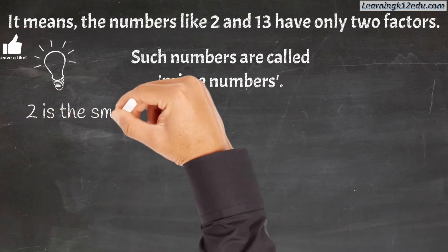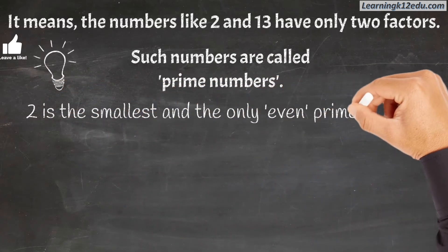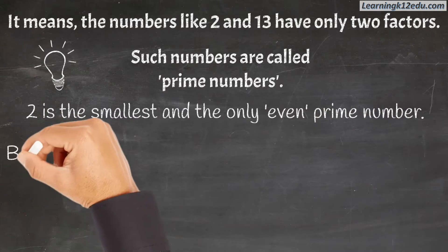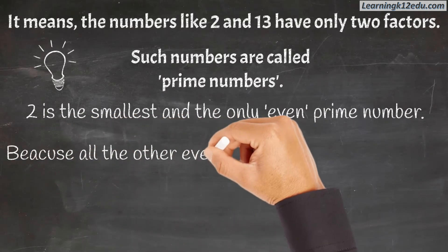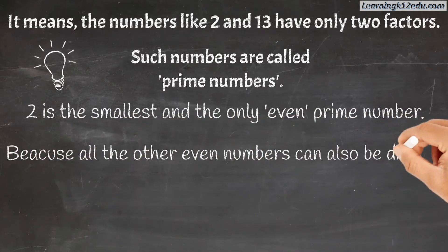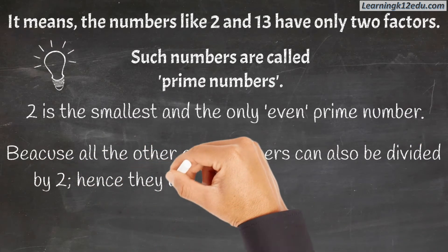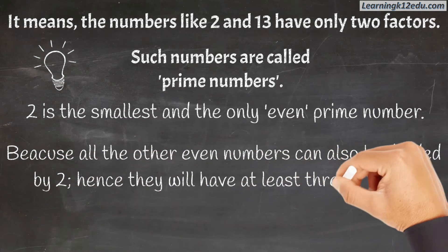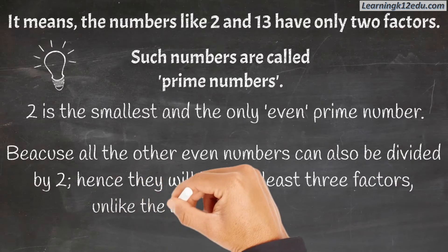2 is the smallest and the only even prime number because all other even numbers can also be divided by 2. Hence, they will have at least 3 factors, unlike the definition of prime numbers.